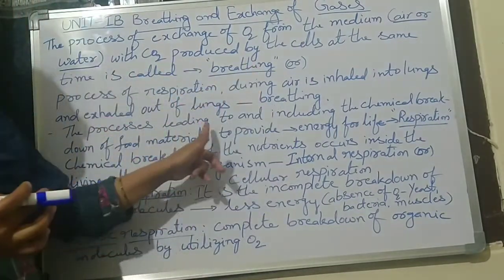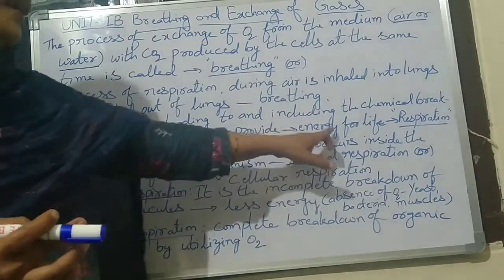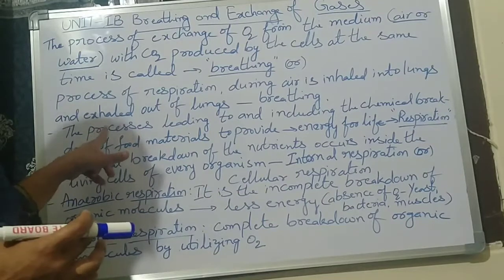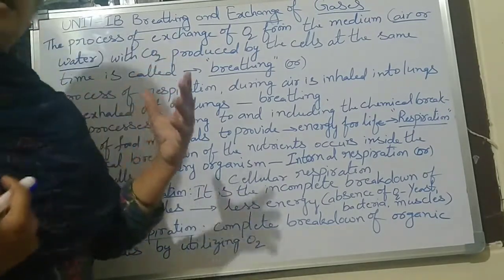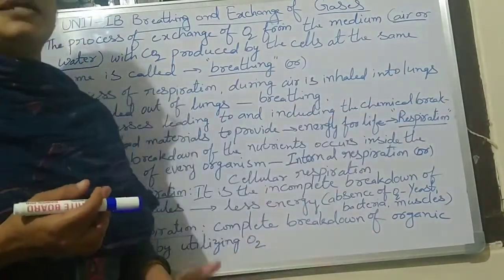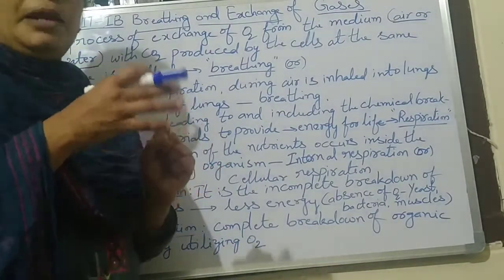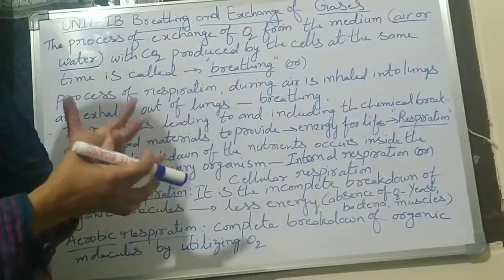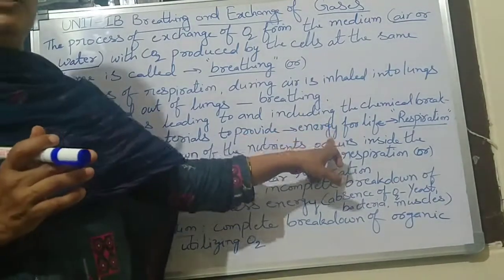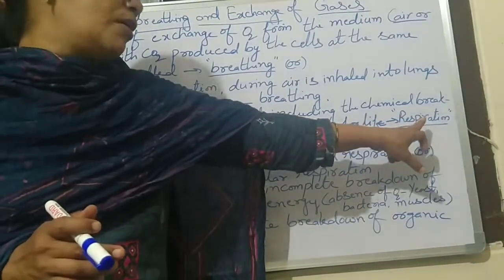The processes leading to and including the chemical breakdown of food materials to provide energy for life is called respiration. Both inspiration and expiration occur. With the help of oxygen, food is broken down by oxidation — that is the chemical breakdown — releasing energy for our life. After digestion, when food is mixed with oxygen, it is oxidized and energy is released to do work.